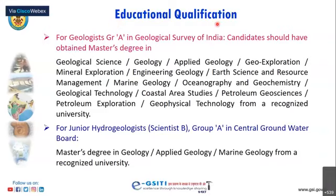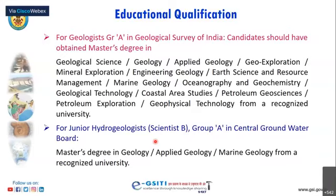For geologists in Group A in GSI, candidates must have a master's degree in geological science, geology, applied geology, geo-exploration, mineral exploration, engineering geology, earth sciences, marine geology, oceanography, coastal area studies, geological technology, petroleum geosciences, or geophysical technology from a recognized university. For junior hydrogeologist scientist B post in the Central Groundwater Board, the candidate must possess a master's degree in geology, applied geology, or marine geology from a recognized university.